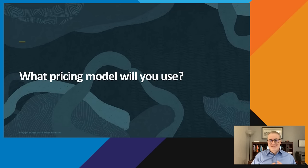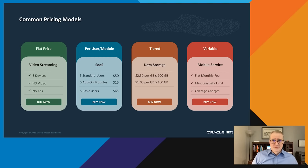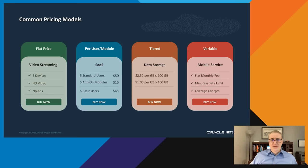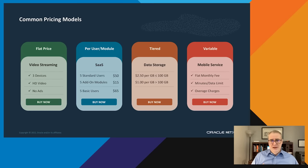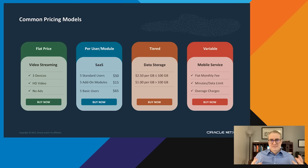The first question is: what pricing model are you going to use when you begin providing your subscription? There are really four. The most typical and easiest to manage is the flat pricing model — like Netflix, Apple TV, or Hulu, where you pay a fixed once-a-month fee. That's probably the easiest one to administer. But there are a few other models becoming more common. Particularly in the software industry, you have the per-user or per-module model, where for every person using the software there's a fee, and as you add functionality there are additional fees. For example, you might be paying $50 for five users, then each has an additional add-on module, bringing the total to $65 a month.